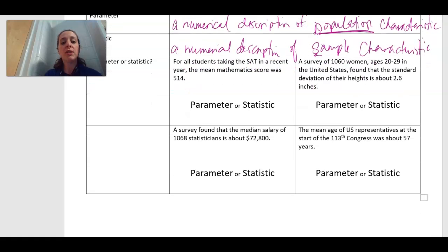So now let's look at these. For all students taking the SAT in a recent year, the mean mathematics score was 514. So we have to figure out is this a parameter or is this a statistic. I see this magical word right here: for all students taking the SAT, which tells me that this would be the population because we were looking at all of them. So because it's a population, it's going to be a parameter.